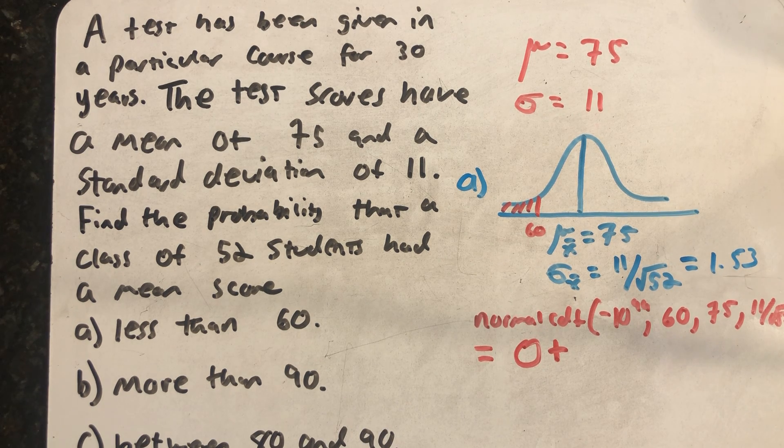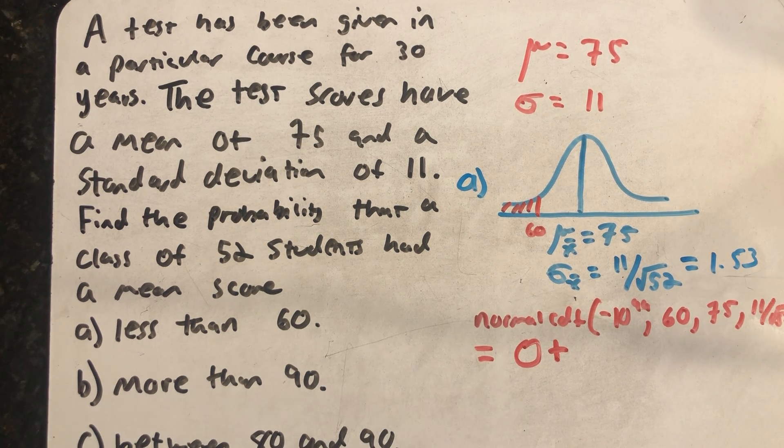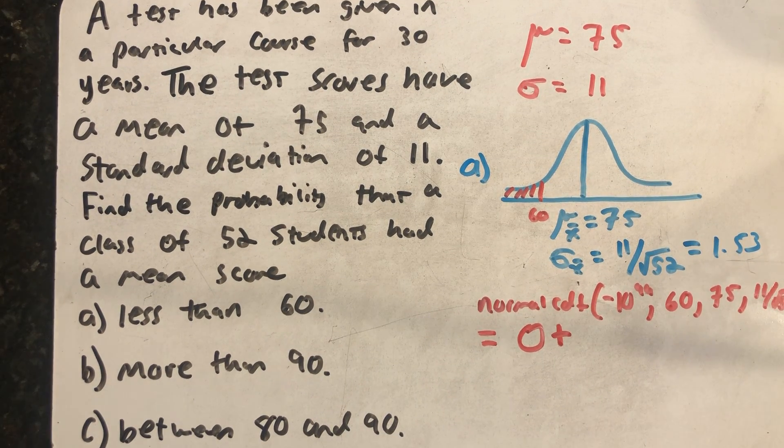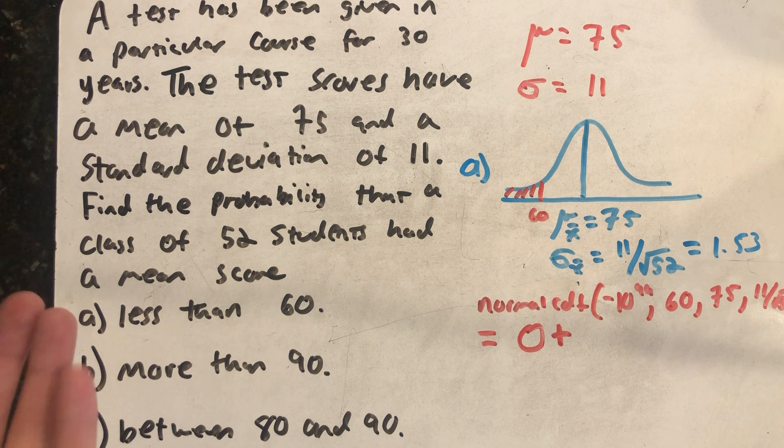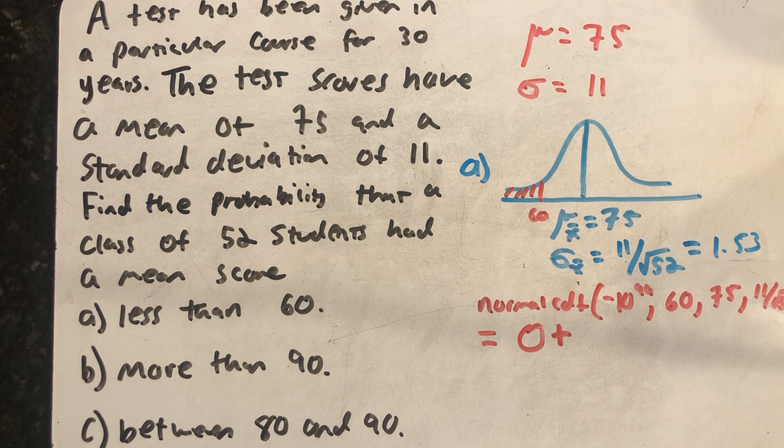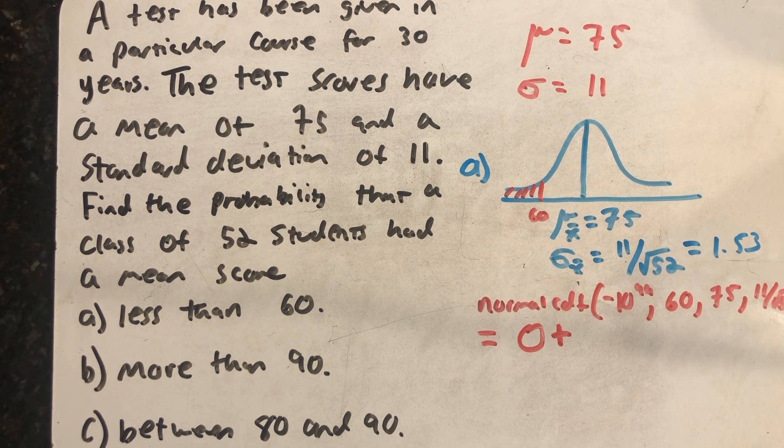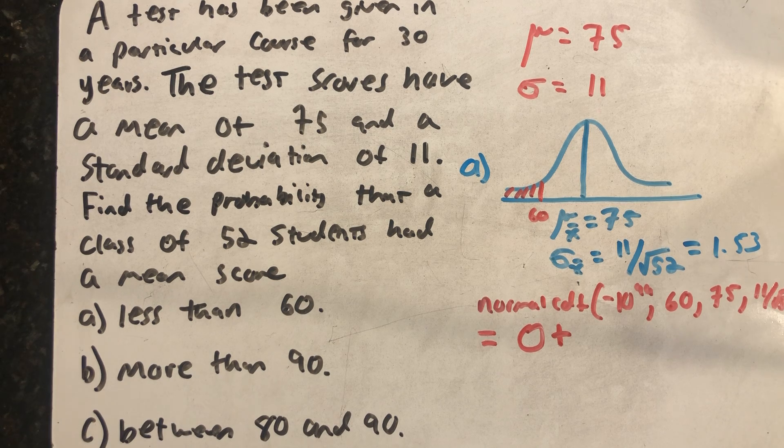In fact, if we calculated a z-score, it would be almost minus 10. That's almost 10 standard deviations below the mean. It's a very rare thing to get a sample from this test with class scores less than 60. Unfortunately, this is a fictitious scenario that I just made up for the problem, so don't read anything into that.